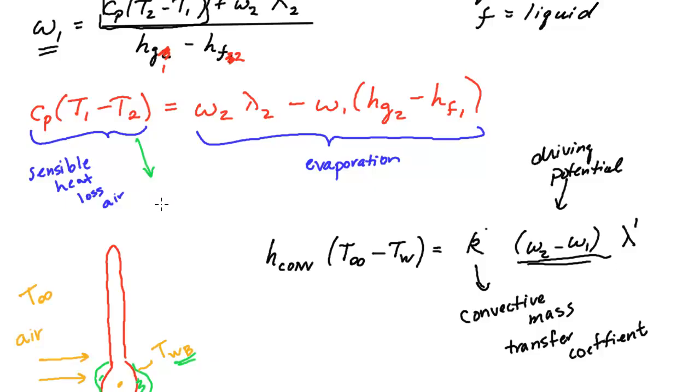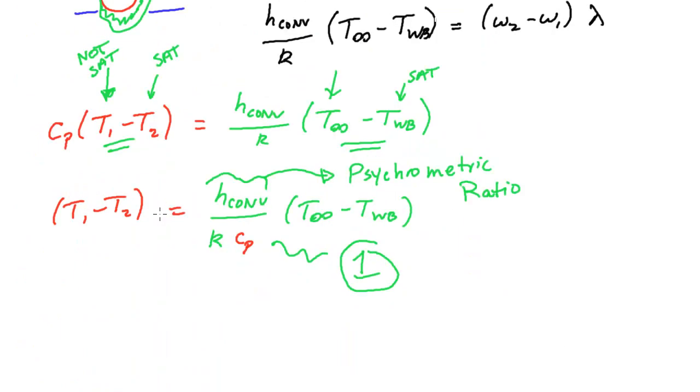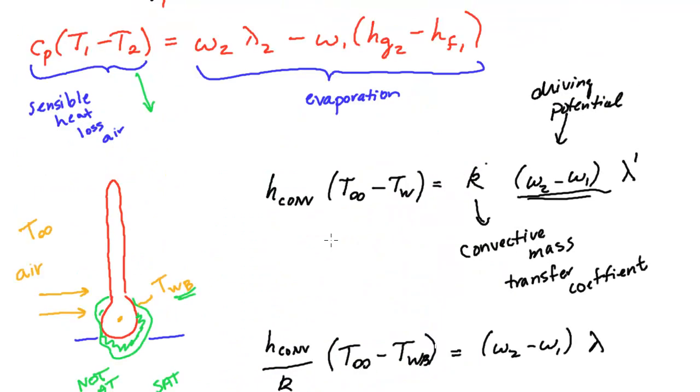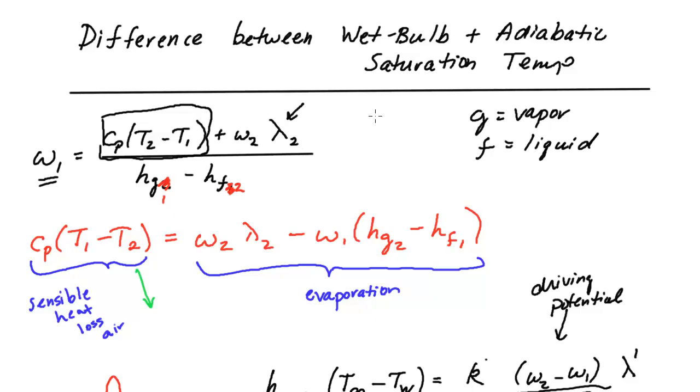And for our HVAC purposes, because we're typically not even dealing with accuracy on the order of one degree Fahrenheit, this small difference is not of dire importance to us in most everyday calculations. But it's useful to go through and actually see why these things are closely related.